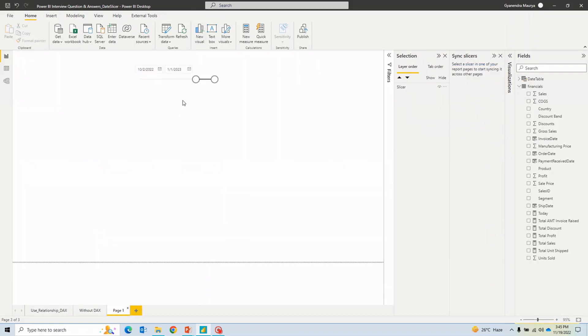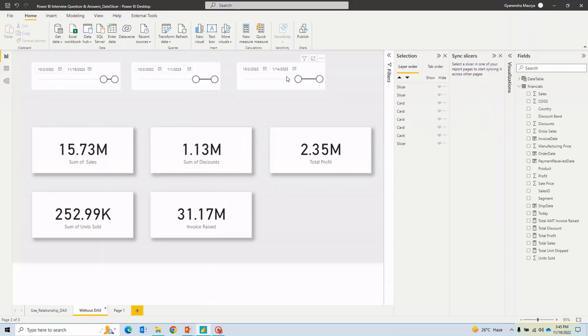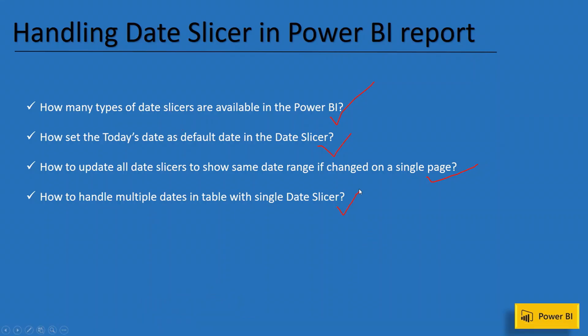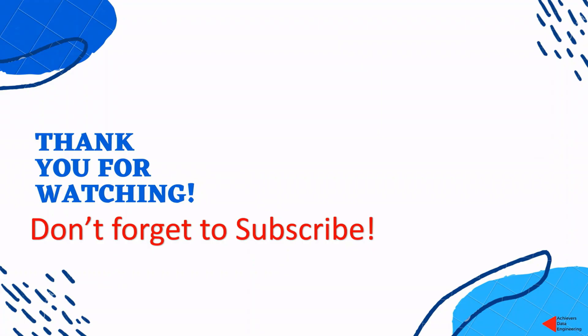I hope this has answered all four questions and you have a good understanding of how to handle multiple dates in a single table while displaying only one date slicer in the report. If you liked the content, please hit the like button and subscribe to the channel to stay up to date on latest videos. Thank you for watching, keep learning, and have a great day.